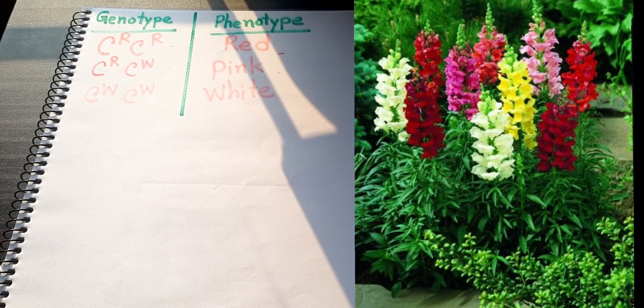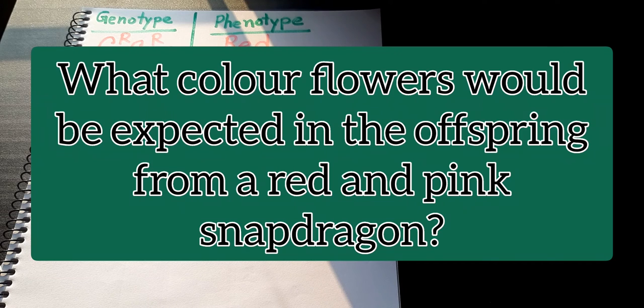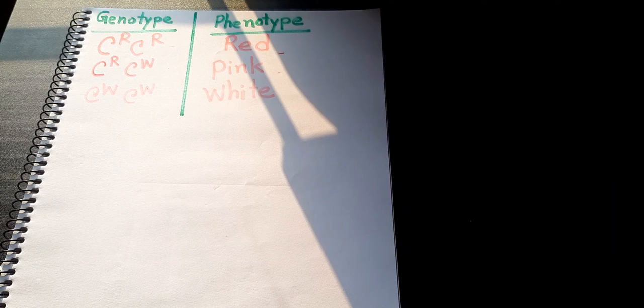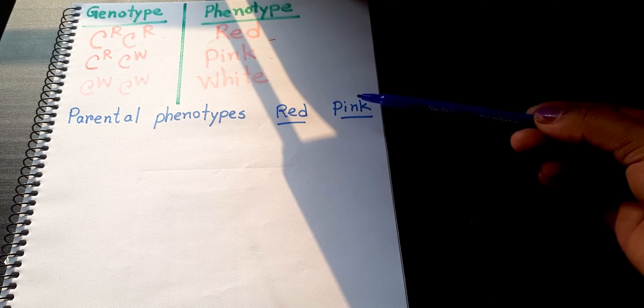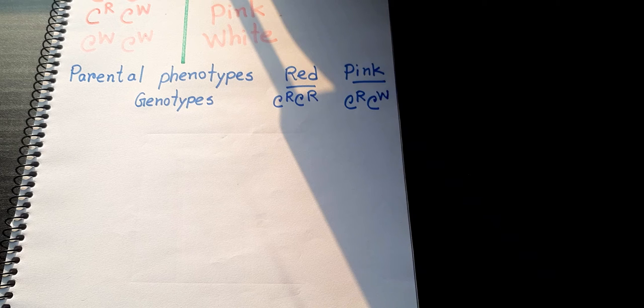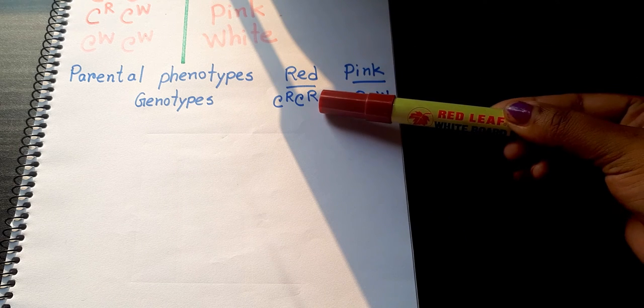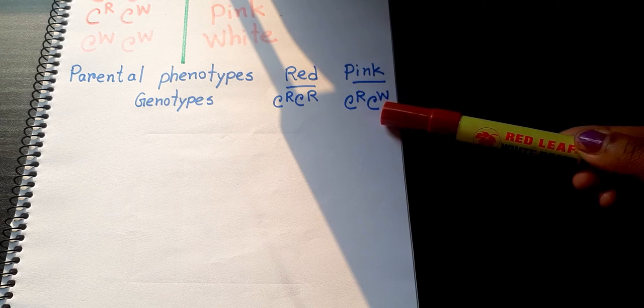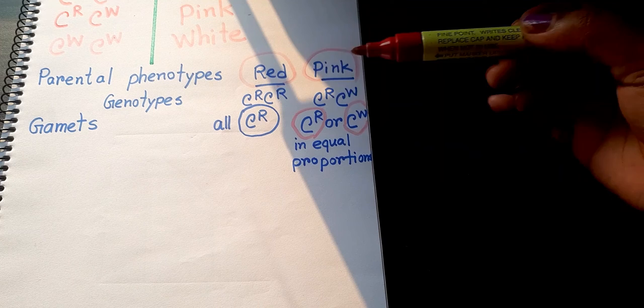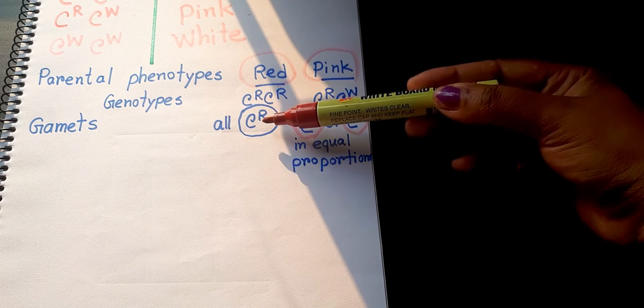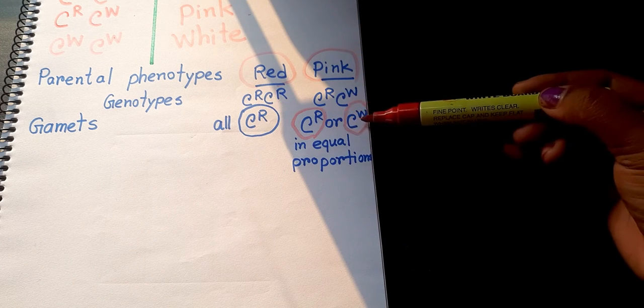Now I'm showing the offspring. What color flowers would be expected in the offspring from a red and pink snapdragon? Here, this is parental phenotype: red and pink. This is parental genotype: CR CR, and here is CR and CW, that is for pink. Gametes: all CR here, and here is CR or CW in equal proportion.